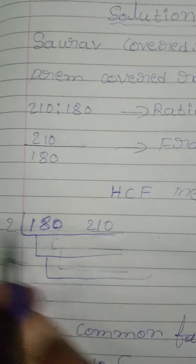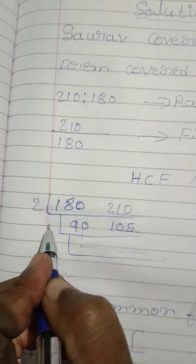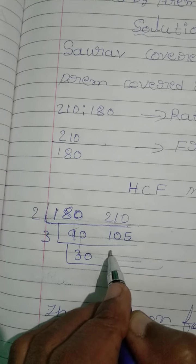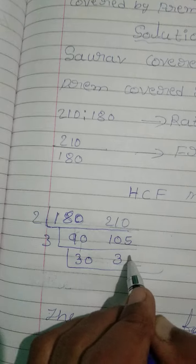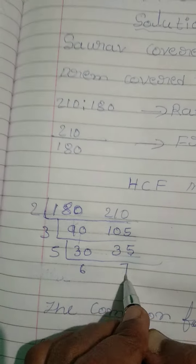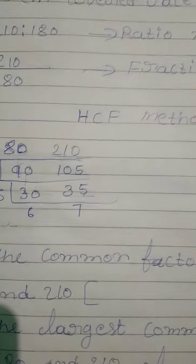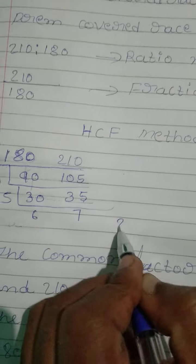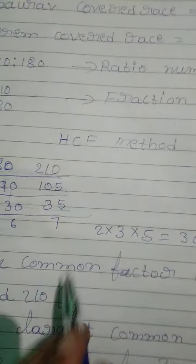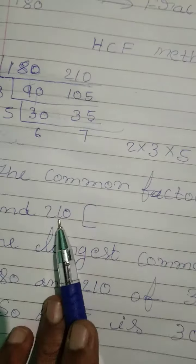180, 210. Using prime factorization: 2 into 3 into 5 equals 30. HCF is 30, the common factor of 180 and 210.